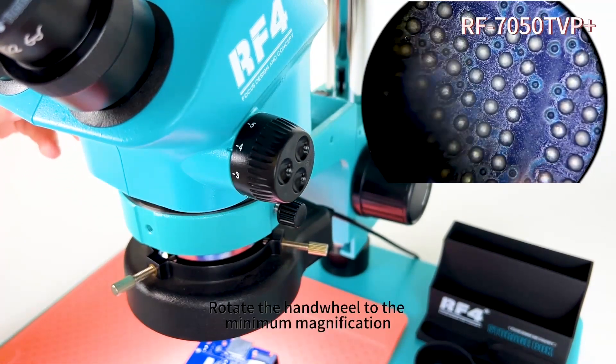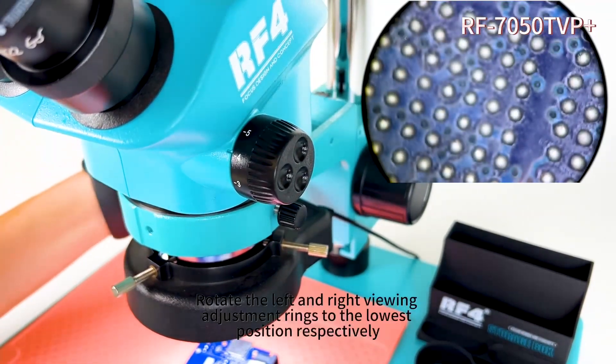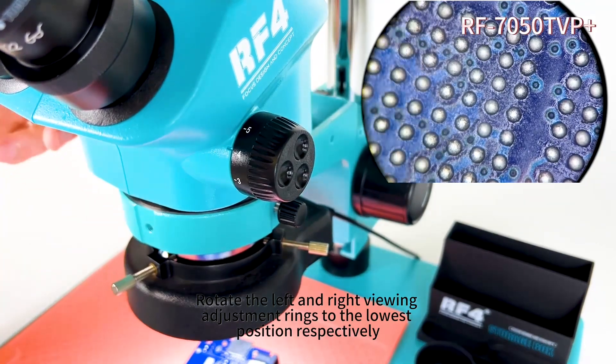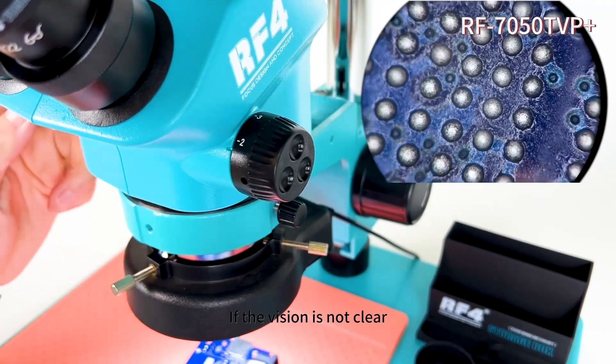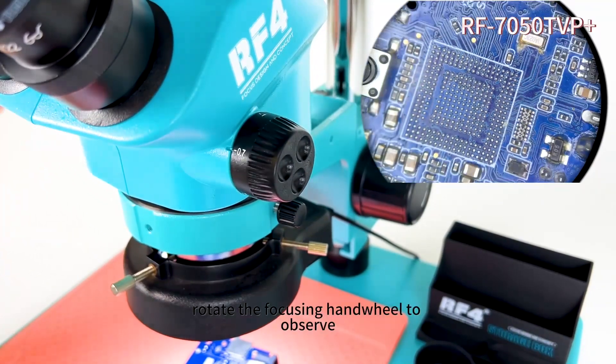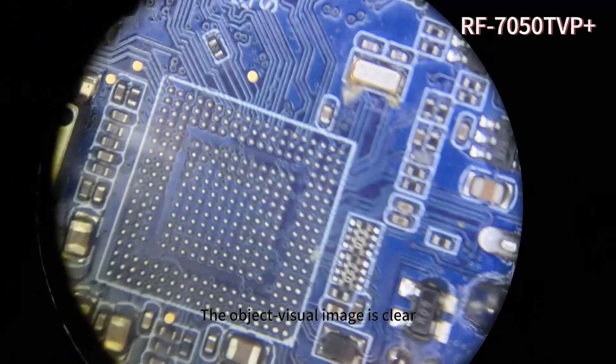Rotate the handwheel to the minimum magnification. Rotate the left and right viewing adjustment rings to the lowest position respectively. Observe through the right eyepiece. If the vision is not clear, rotate the focusing handwheel to observe. The object visual image is clear.